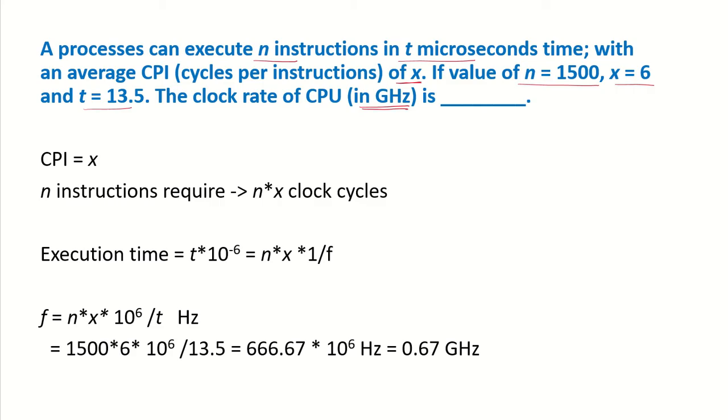We are given that clock cycles per instruction is X. That means one instruction requires X clock cycles. So the number of clock cycles required by N instructions would be N into X.